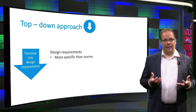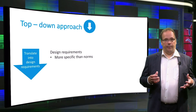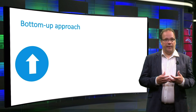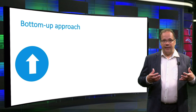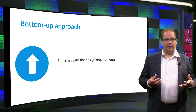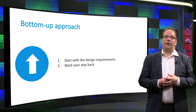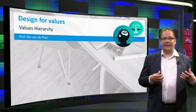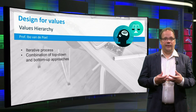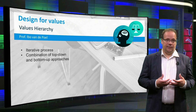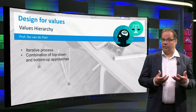The values hierarchy method I just described takes a top-down approach. However, you can also create a values hierarchy from the bottom-up. In that case, you start with design requirements already chosen by clients or stakeholders, and then you work back from there by looking for the general norms that express those requirements and the values that underlie these design requirements. Making a values hierarchy will, in practice, often be an iterative process that combines top-down and bottom-up approaches. Building a values hierarchy requires judgment, and there can be disagreements at every stage — whether it is deciding which values are relevant, or how they should be expressed by norms and translated into design requirements.